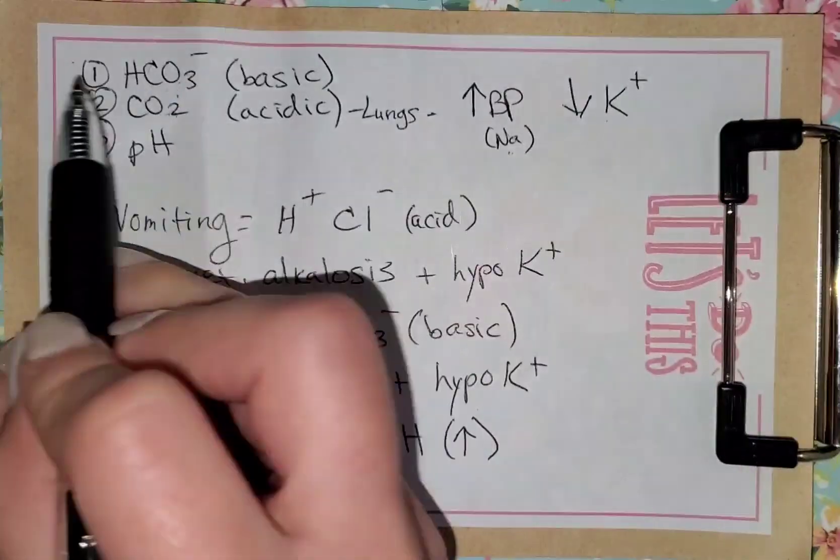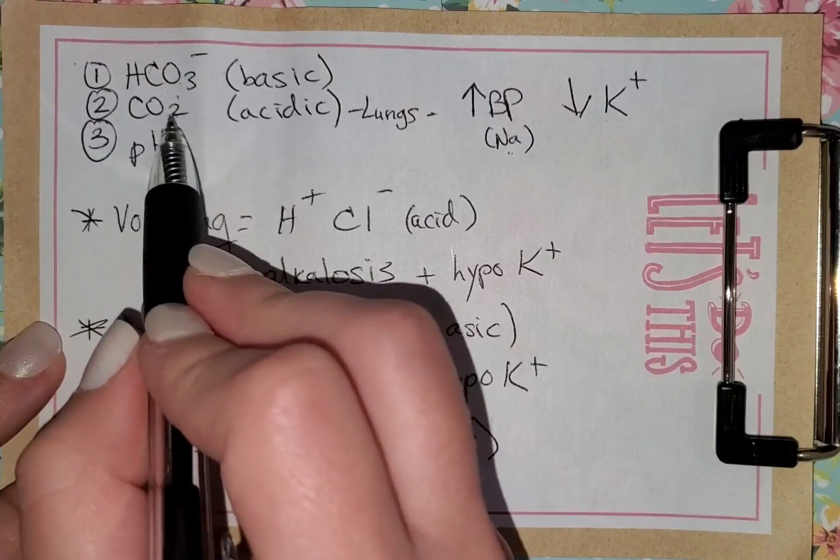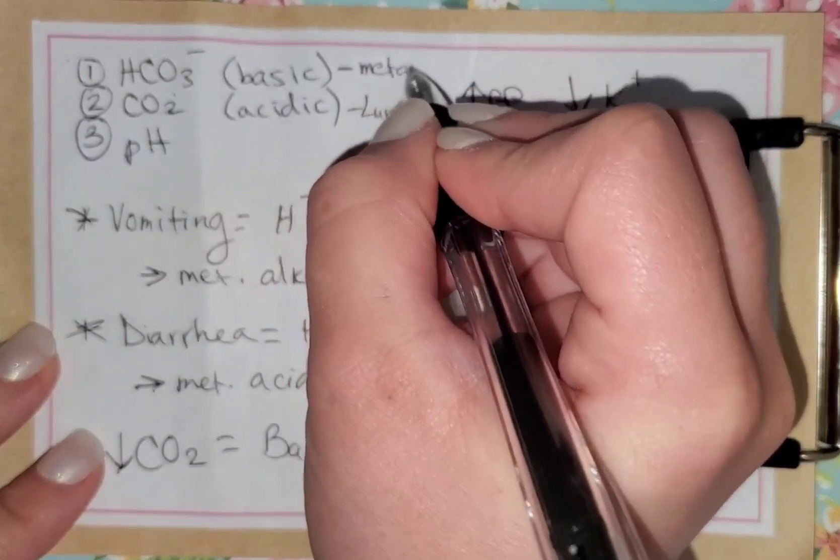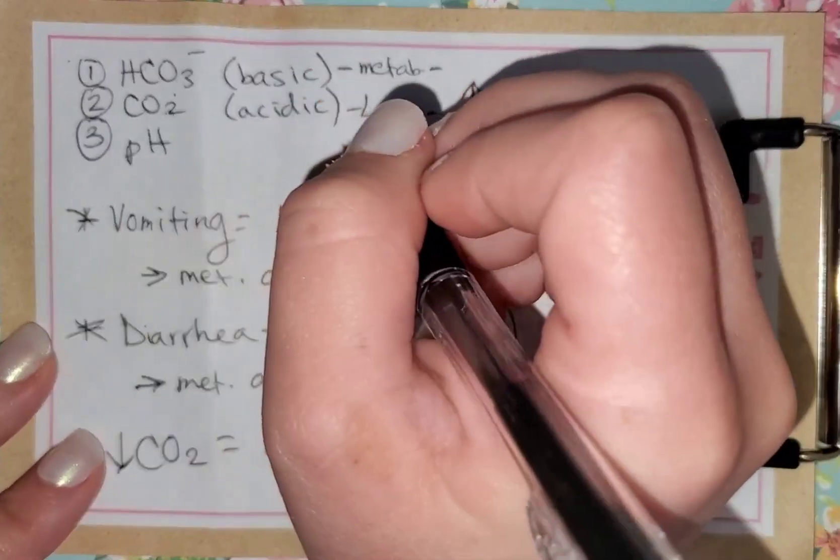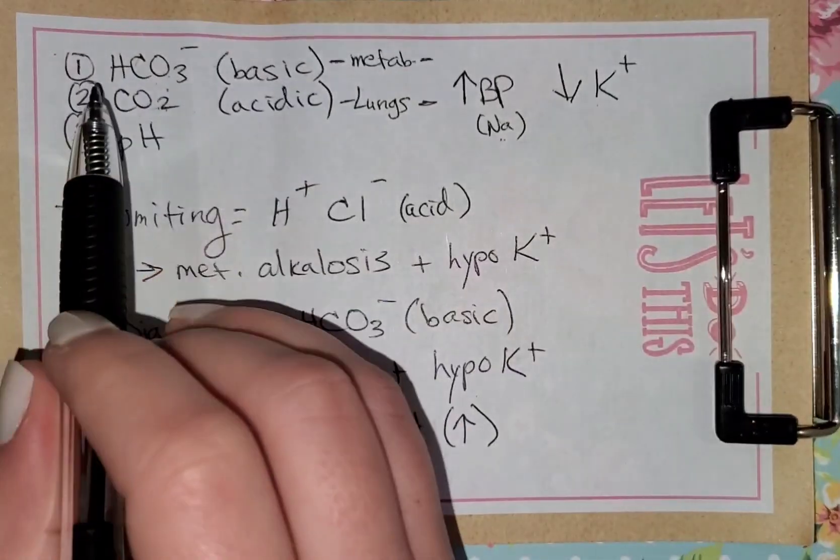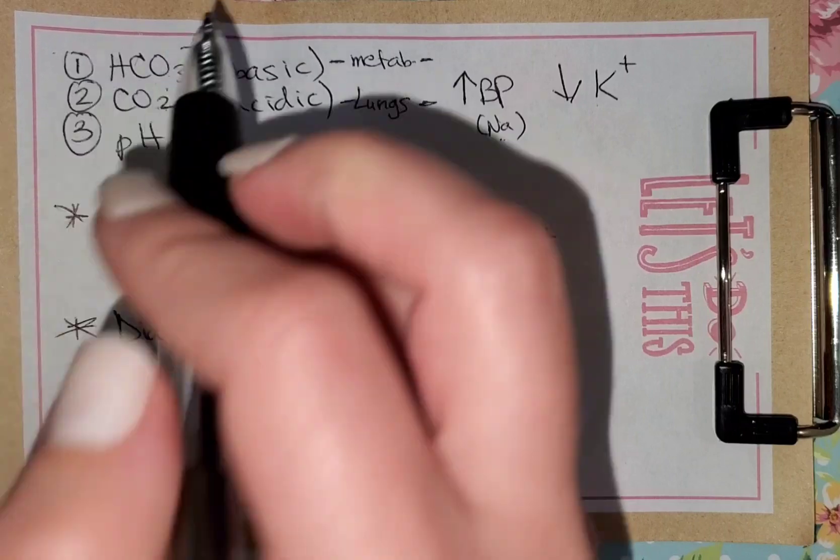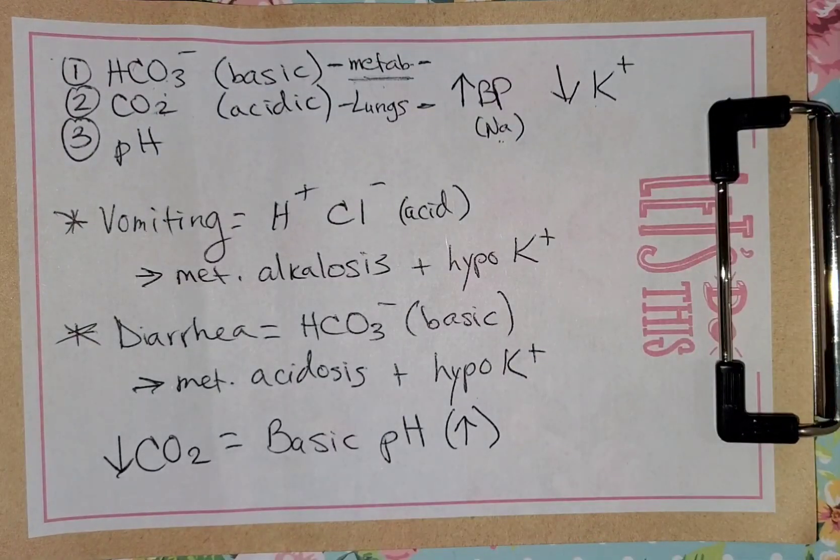Whereas here, if you start off with bicarbonate and you see a change, and you see a change in CO2 as well, this is most likely because it is a metabolic problem. It's in the kidneys, most likely. You need to evaluate the scenario. So if it's less than 24 hours, very safe to assume that it's going to be metabolic. I hope that helps. If you have any questions, let me know and I'll try to answer them in the comments. Thank you.